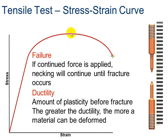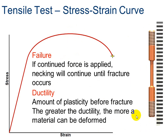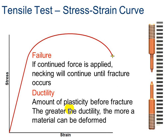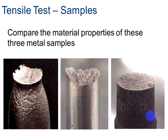Failure happens if we continue to apply force past the tensile strength — the necking will progress and we will break it apart, as shown in the animation. Ductility is the amount of plasticity before fracture — how much it will stretch out before it actually breaks. Looking at three different metal samples that all broke differently: the first has more ductility than the second, and the second more than the third, because the first deformed more and had more necking. The last one had hardly any — it just broke in half, so it's not very ductile.